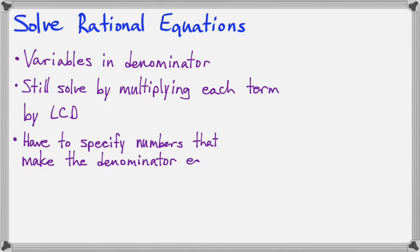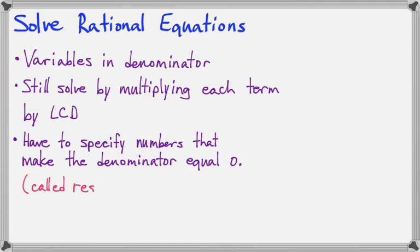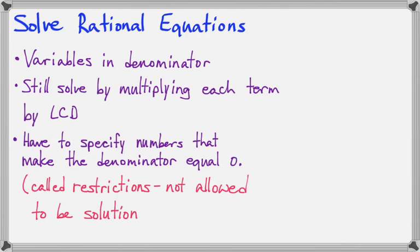There's one other housekeeping item we have to take care of. We know from previous experience we can't let the denominator equal zero, so we will have to find all the numbers that would make the denominator equal zero. Those numbers are called restrictions, and they are not allowed to be solutions. So if we ever find a restriction that turns out to be a solution to the equation, we have to throw it out.